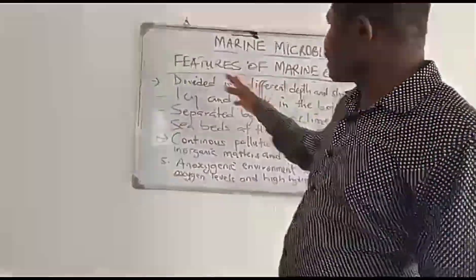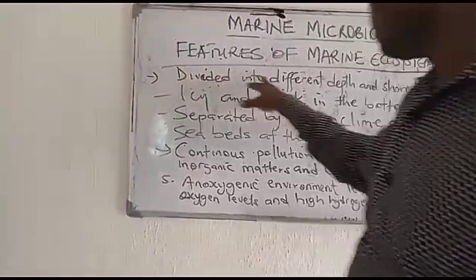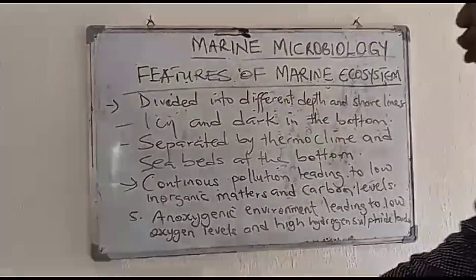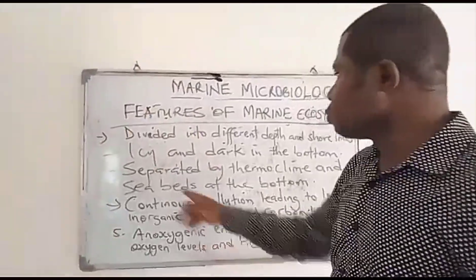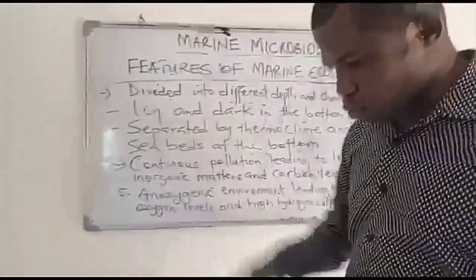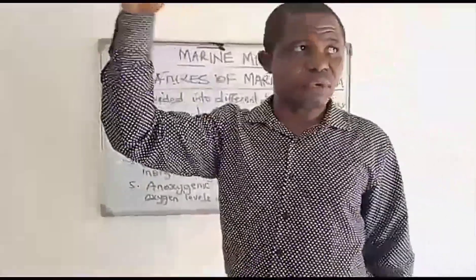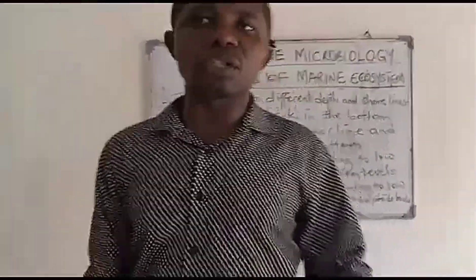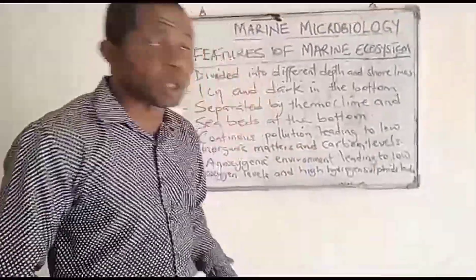The features of the marine ecosystem: one, it is divided into different depths and shorelines. It is icy and dark at the water bottom — light is abundant at the surface but darker at the bottom. It is separated by thermocline, which is a point where it is either cold or hot, and by the seabed at the bottom.